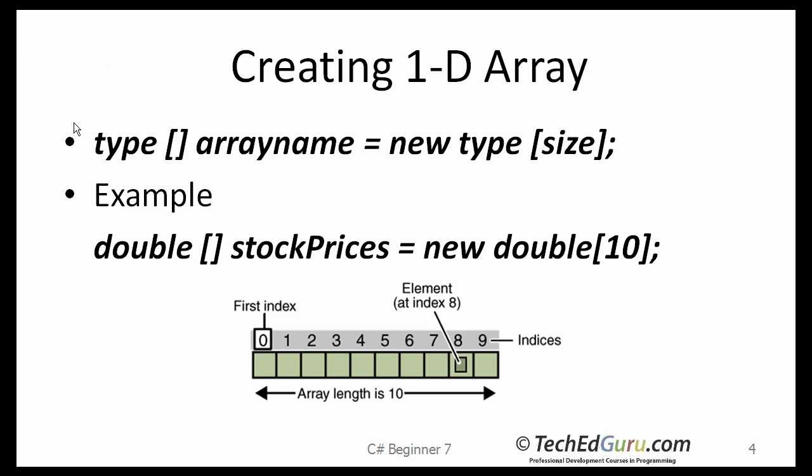Here is an example of creating 1D array. Type is the base type, the type of data that the array will hold. The size is the size of the array, the number of elements the array will hold. The new keyword builds the array and allocates the required memory. Once the array is created, its length is going to be fixed.